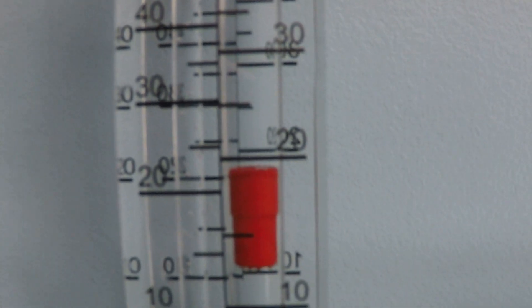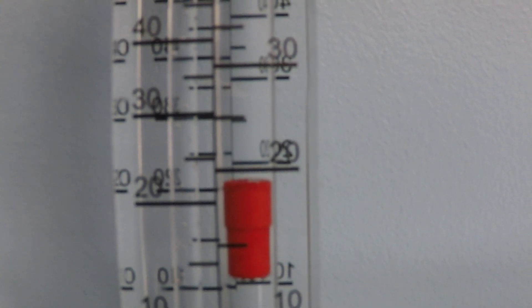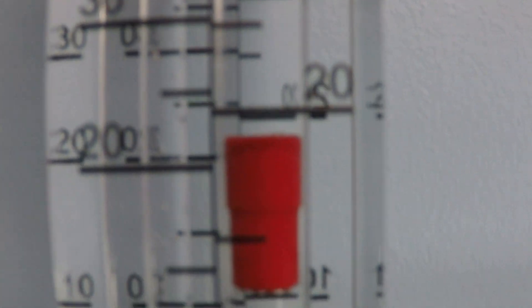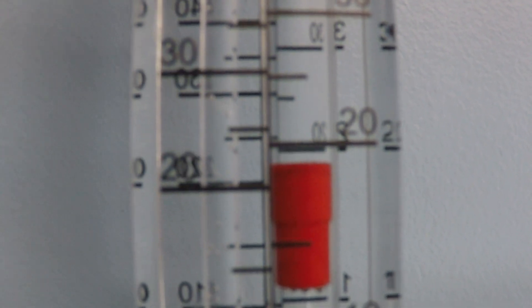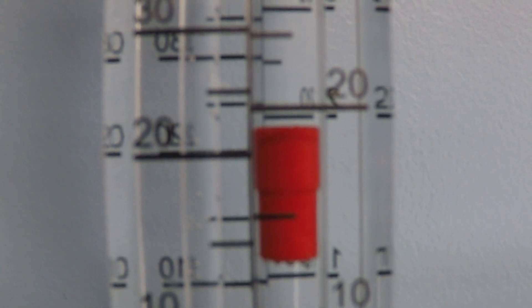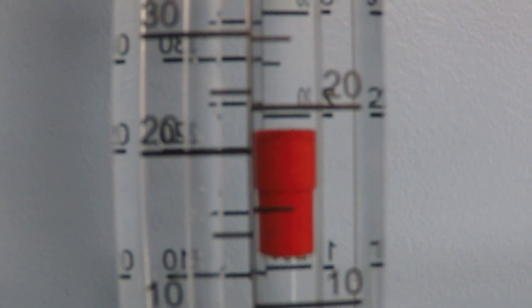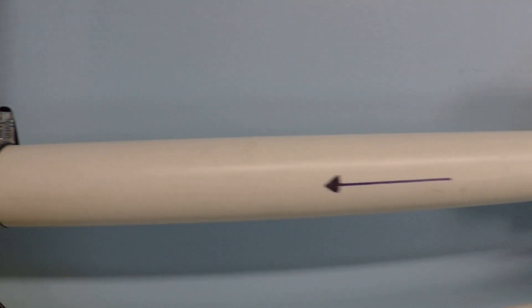Same thing, this one uses a float, and you read your number on the top of the float. As you can see, if you get just at the right level, it's just over 20 gallons per minute. That's how both of them read.